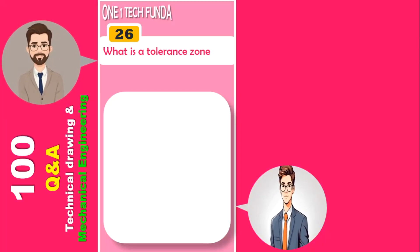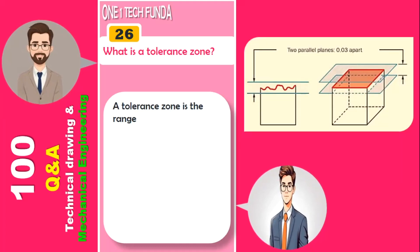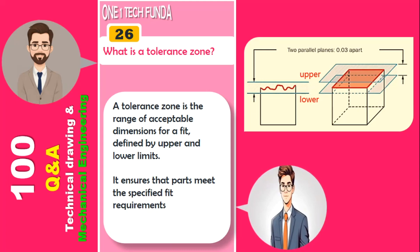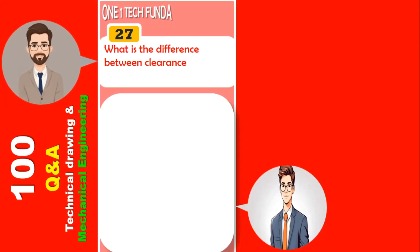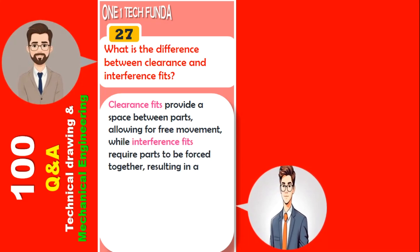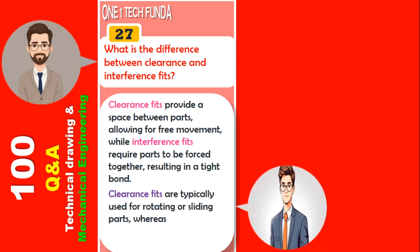What is a tolerance zone? A tolerance zone is the range of acceptable dimensions for a fit, defined by upper and lower limits. It ensures that parts meet the specified fit requirements while allowing for manufacturing variations. Clearance fits provide a space between parts allowing for free movement, while interference fits require parts to be forced together resulting in a tight bond. Clearance fits are typically used for rotating or sliding parts, whereas interference fits are used for securing components.